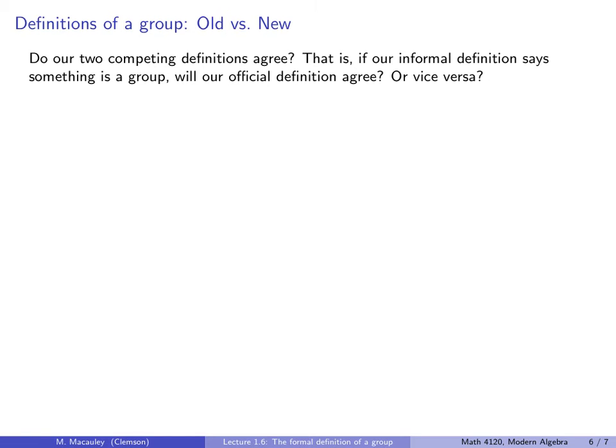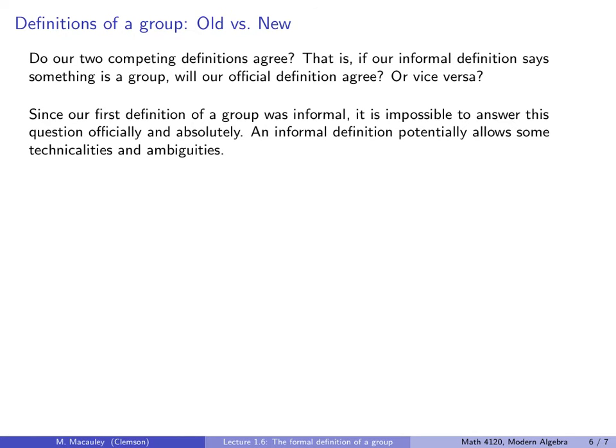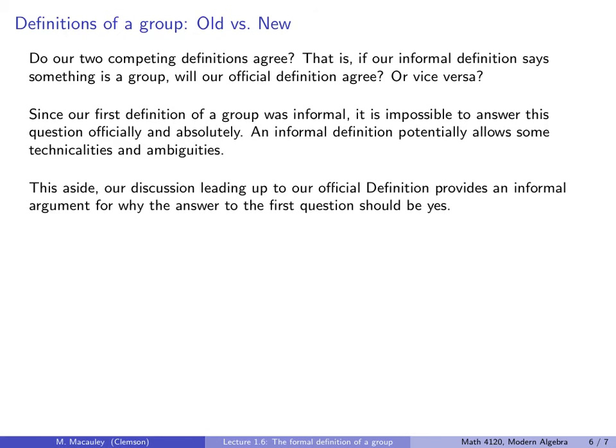A natural thing to ask is whether our two competing definitions actually agree. That is, if our informal definition says something is a group, will our official definition agree? Or vice versa? Since our first definition of a group was informal, it's impossible to answer this question officially and absolutely, because there's some gray area. An informal definition potentially allows technicalities and ambiguities, as ours does. This aside, our discussion leading up to our official definition provides an informal argument for why the answer to the first question should be yes. And by the first question, I mean, if our informal definition says something is a group, then our official definition will say that as well. So hopefully I've convinced you of that.